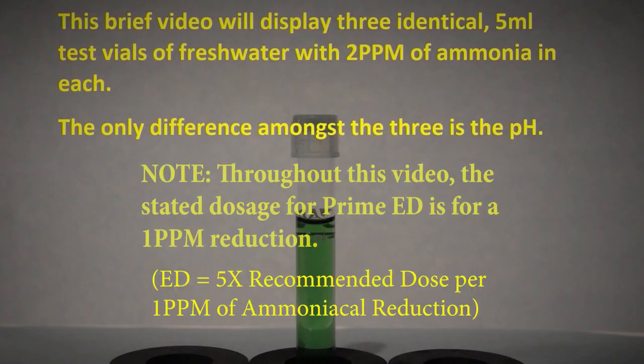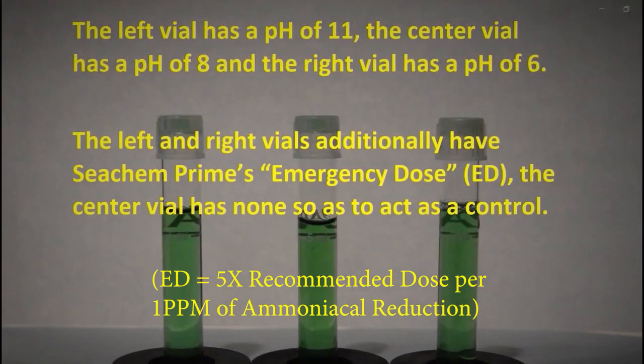This brief video will display three identical 5 milliliter test vials of fresh water with two parts per million of ammonia in each. The only difference among the three is the pH. The left vial has a pH of 11, the center vial has a pH of 8.